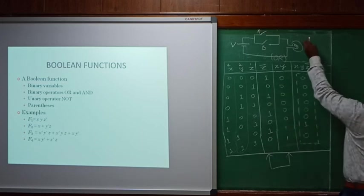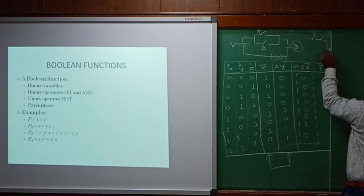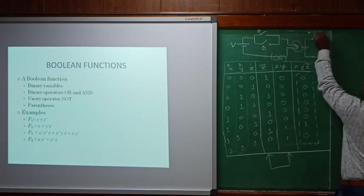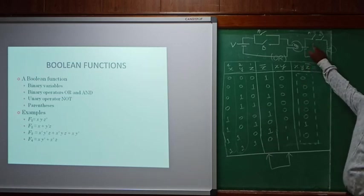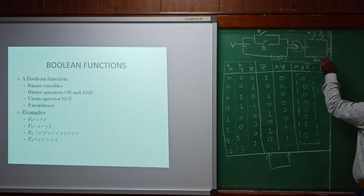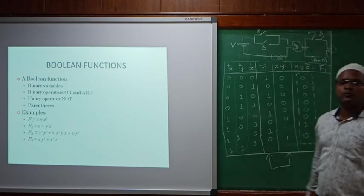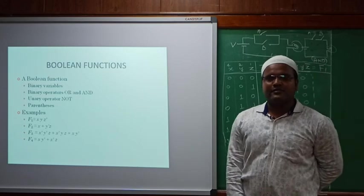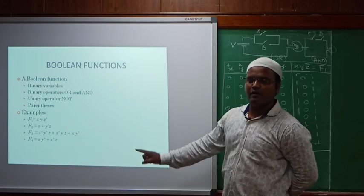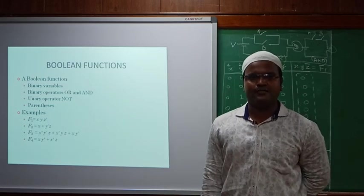For the AND gate: two switches in series connected to a bulb — if both A and B are closed, both are high, then the output is high, working like an AND gate. For the NOT gate: one switch in parallel — the complement behavior. In the next class we will solve f2, f3, and f4 functions — how to obtain the truth table for two, three, and four variables. Thank you.